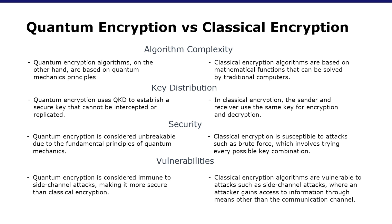Let's look at some key differences between classical and quantum encryption. The first difference is algorithm complexity. Classical encryption algorithms are based on mathematical functions that can be solved by traditional computers, and their security depends on the complexity of the algorithm and the length of the key used. Quantum encryption algorithms, on the other hand, are based on quantum mechanic principles, making them much more complex than classical algorithms. They are also not susceptible to brute force attacks, making them more secure than classical encryption methods.